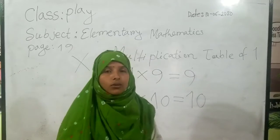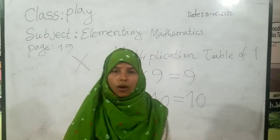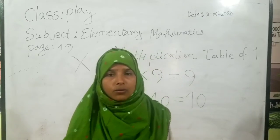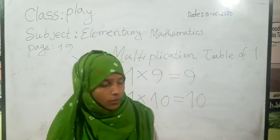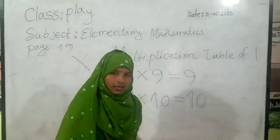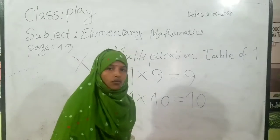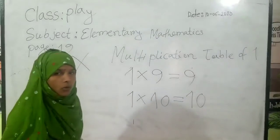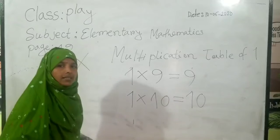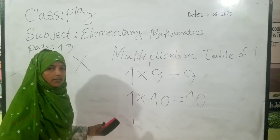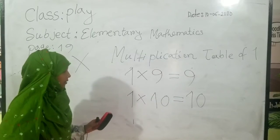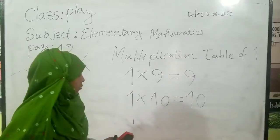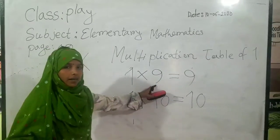One zero's are zero. One one's are one. One two's are two. One three's are three. One four's are four. One five's are five. One six's are six. One seven's are seven. One eight's are eight. One nine's are nine.